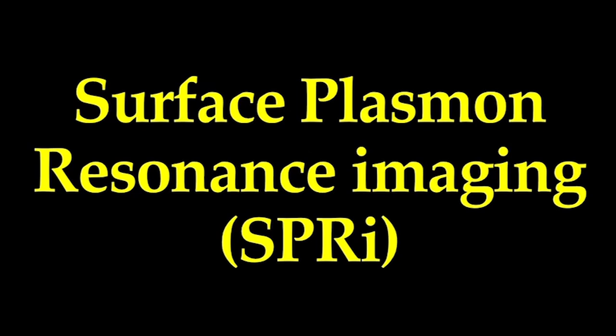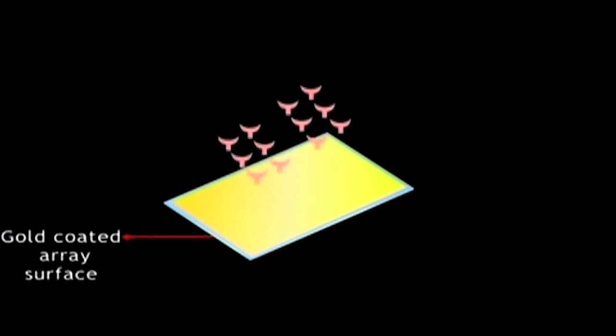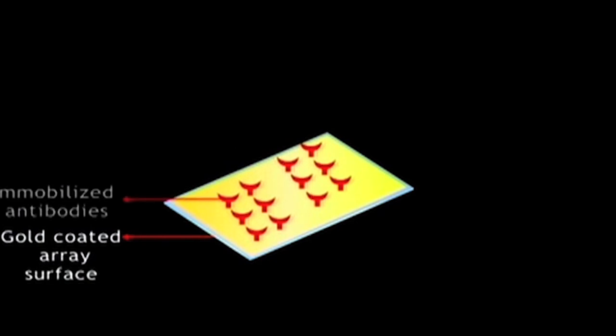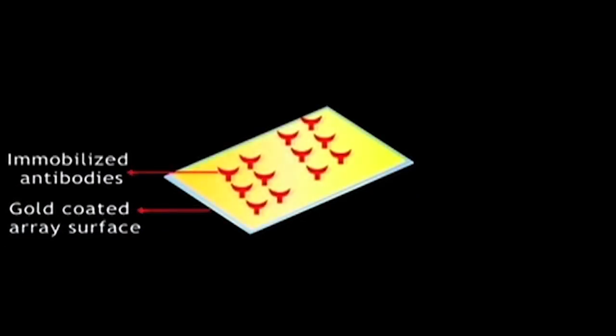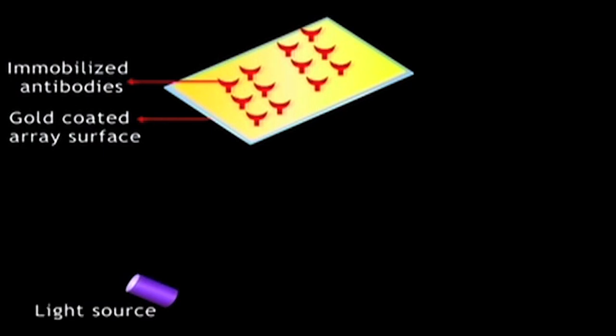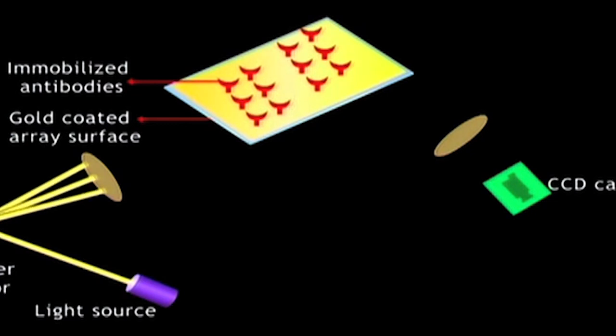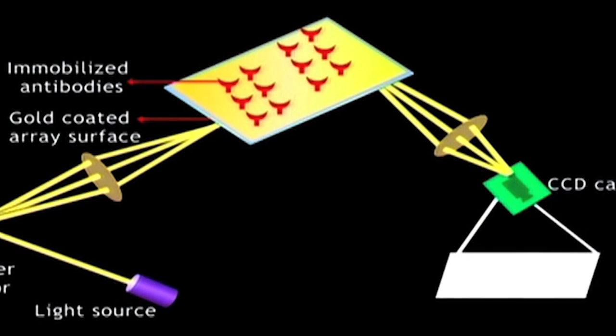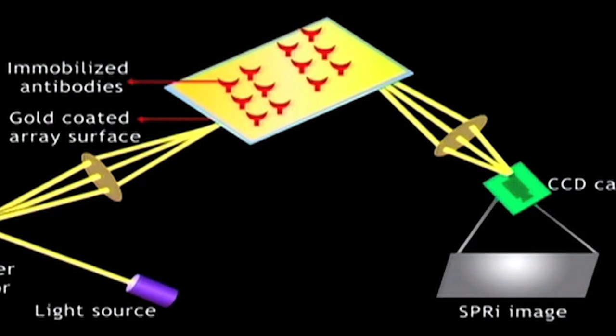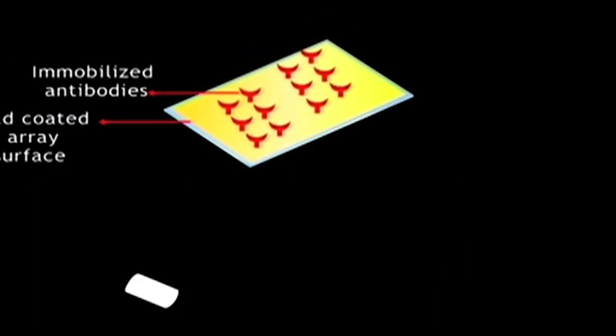Surface Plasmon Resonance Imaging, or SPRI. In this technique, a gold-coated glass array surface is used for immobilization of antibodies complementary to the target protein of interest. A broad beam, monochromatic polarized light originating from a suitable light source is used to illuminate the entire biochip surface with the help of mirrors placed at suitable angles that will reflect the light onto the surface. The reflected light from each spot on the array surface is captured by a CCD camera and used to generate the SPRI image.